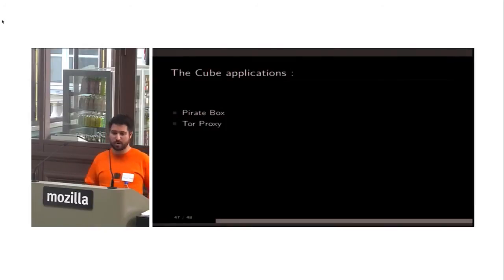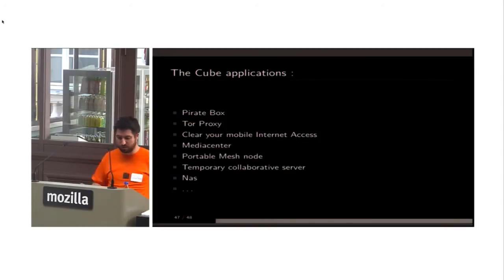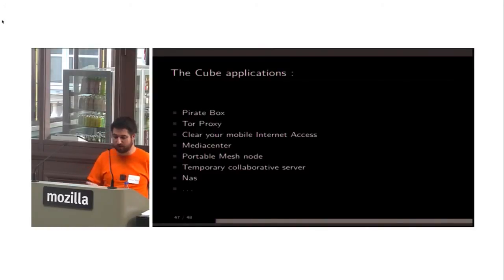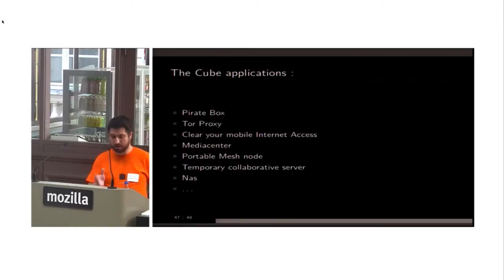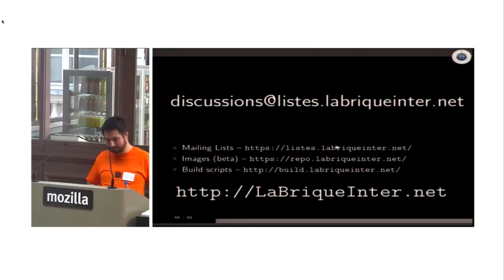There are several cube applications: you can use it as a pirate box, as a Tor proxy, to clean your mobile internet access, as a media center, as a portable mesh node, or as a temporary collaborative server. Today the pirate box and Tor proxy are working, but if you want to transform it into a portable mesh network, go and do it.